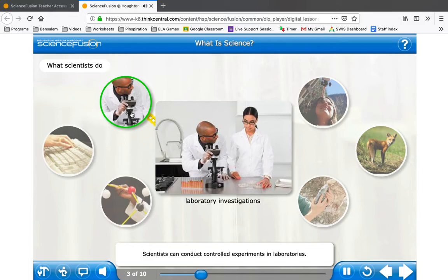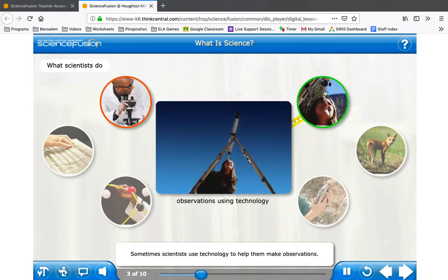Scientists can conduct controlled experiments in laboratories. Sometimes scientists use technology to help them make observations. This scientist is using a telescope to make observations about the universe.